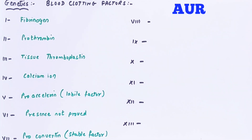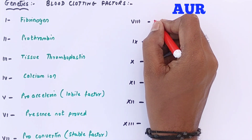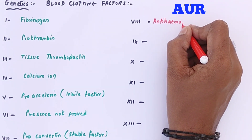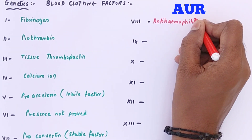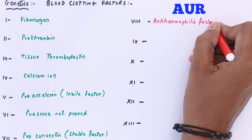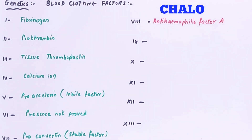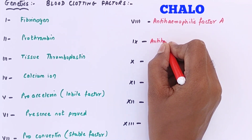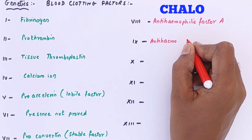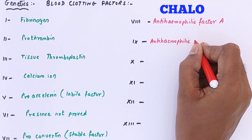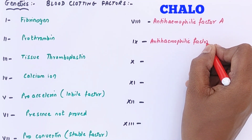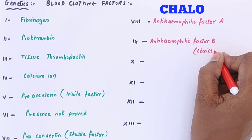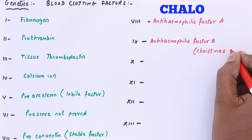Aur stands for blood clotting factor eight, which is anti-hemophilic factor A. Chalo — the word starting with C — stands for Christmas factor, also known as anti-hemophilic factor B. Factor nine (Christmas factor) is one of the most important questions asked in the NEET exam.